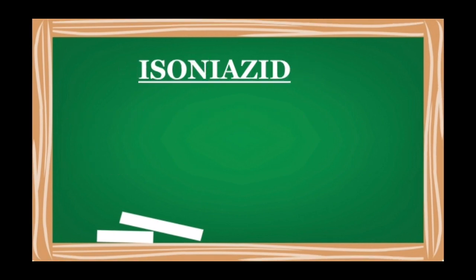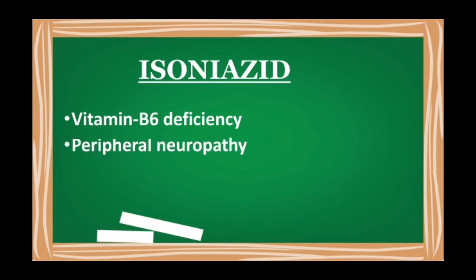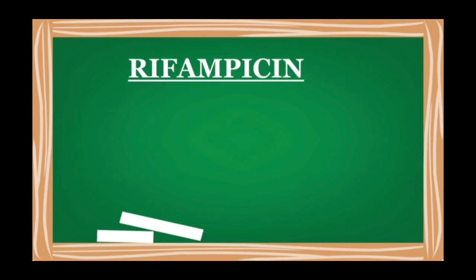Next is isoniazid. Its important side effects include vitamin B6 deficiency, peripheral neuropathy causing pain and inflammation in the muscles of the hands and feet, and hepatotoxicity, meaning it causes toxicity in the liver.